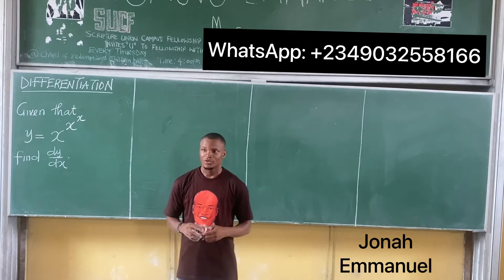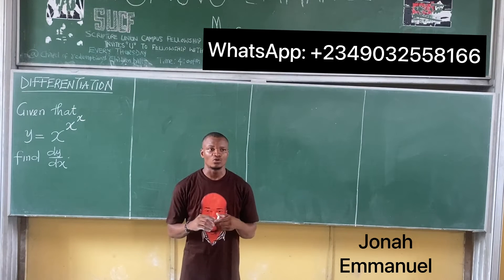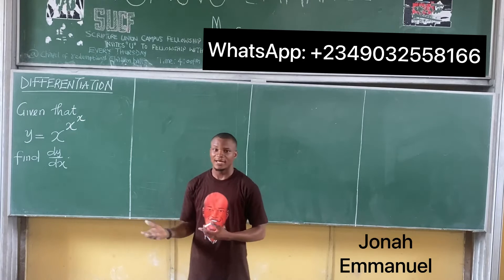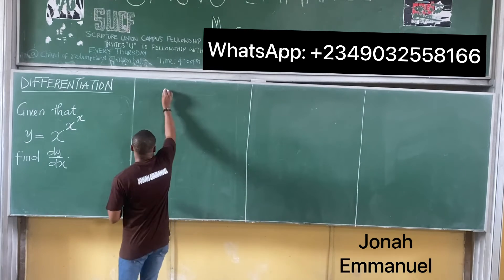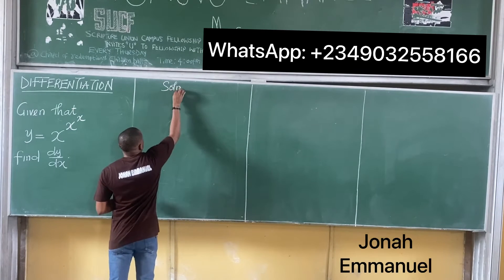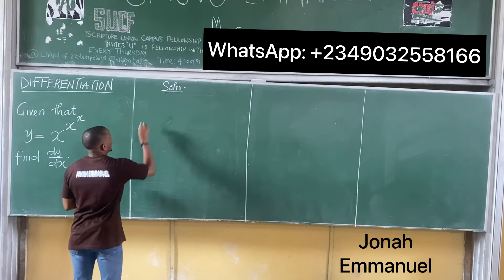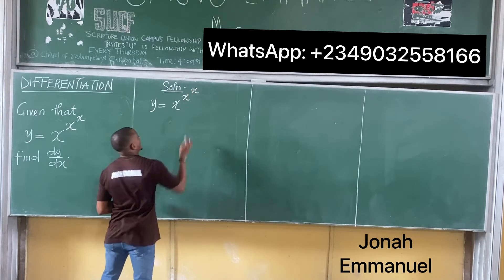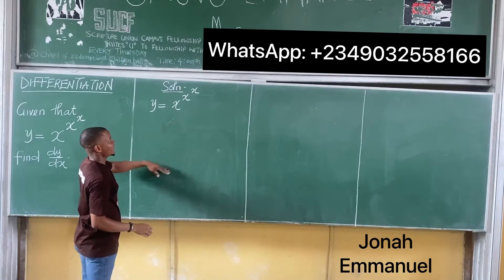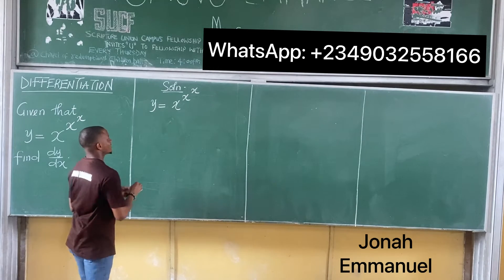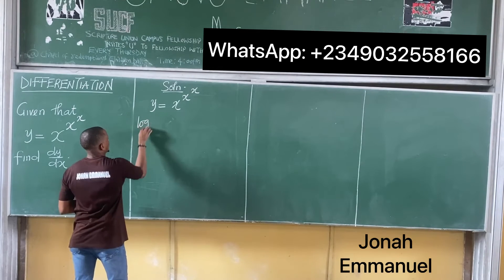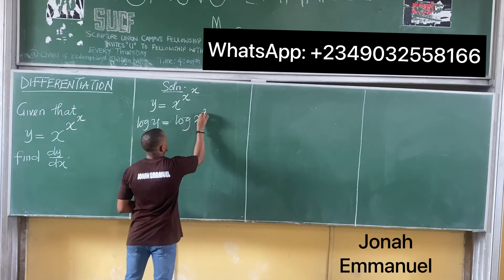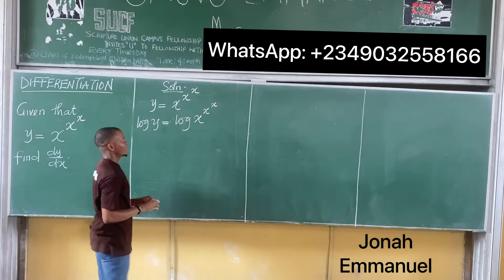So what do we do? Just like in our previous example, the idea is to use the concept of logarithmic differentiation. So we take the log of both sides. Solution: we have y equal to x to the power x to the power x. The first step is to take log of both sides, so we have log y equal to log of x to the power x to the power x.